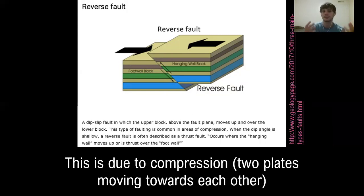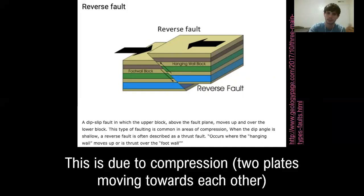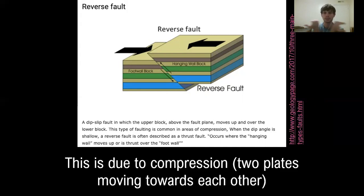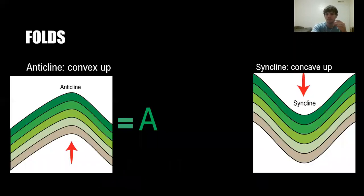Reverse faults are found at convergent plate boundaries when the plates converge on each other. The foot wall goes down. The force that causes this is compression, as opposed to a normal fault which is extensional. So the reverse fault is the reverse of a normal: instead of going out, it's going in. What reverse faults can cause — when two plates converge on each other — are formations called folds.